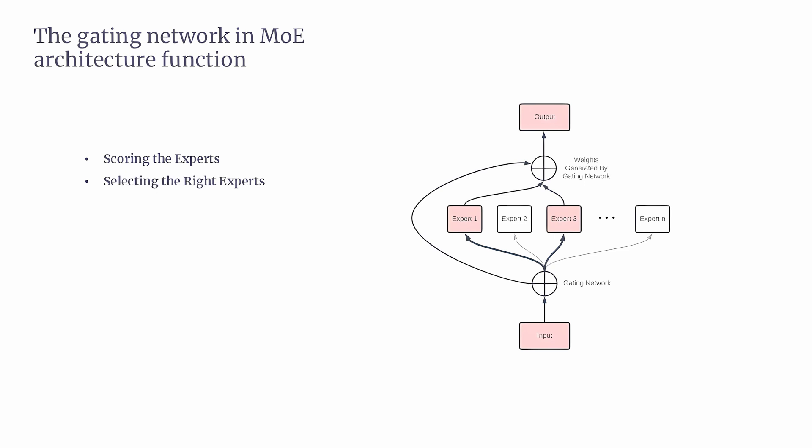The second step: selecting the right experts. Once scores are assigned, the gating network selects a subset of experts to process the input. With top-1 gating, the input is sent to one expert — the highest scoring one. With top-2 gating, the input is sent to two experts, increasing accuracy. By choosing only the most relevant experts, the model avoids unnecessary computations, making it faster and more efficient.